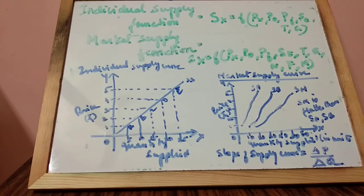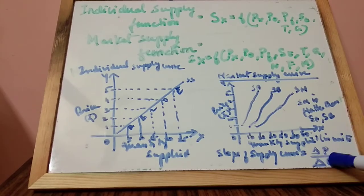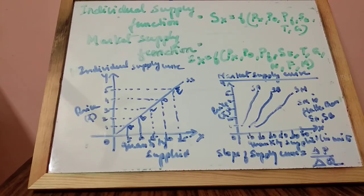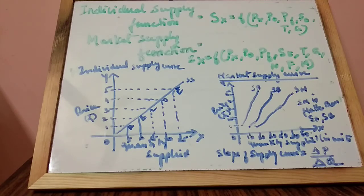How do you find the slope of the supply curve? The slope is calculated as change in price divided by change in quantity supplied. Due to the direct relationship between price and supply, the supply curve slopes upwards, so the slope is positive. The slope measures the flatness or steepness of the supply curve based on absolute changes in price and quantity.